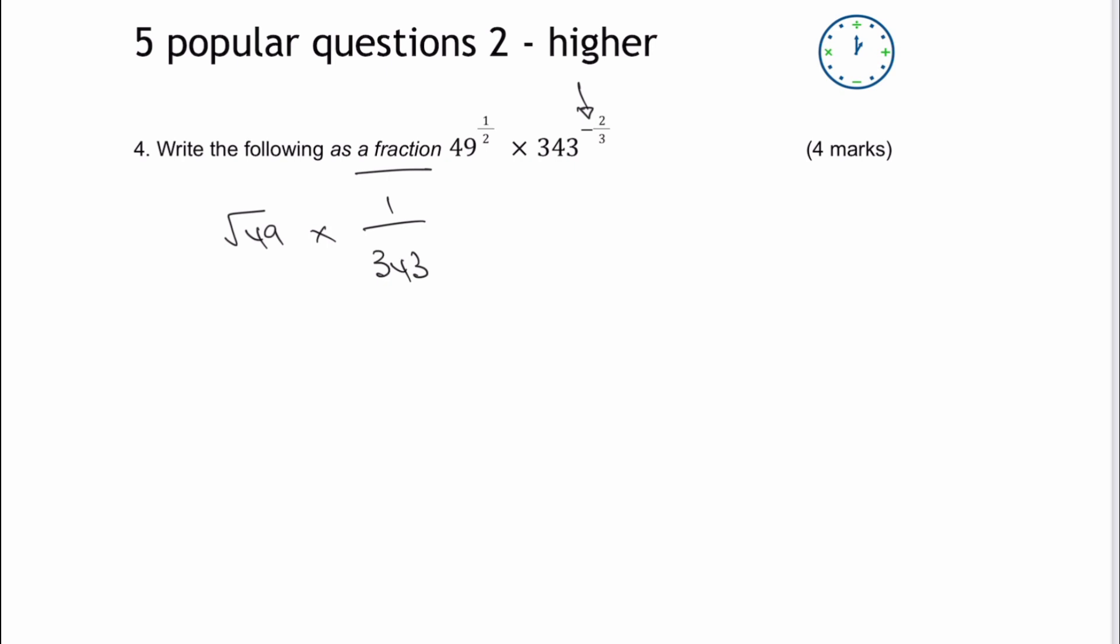Now, to the power of two-thirds basically means one-third, and that's going to be effectively multiplied by two. So I can say, well actually, it's 343 to the power of one-third, which is the same as saying the cube root of 343.